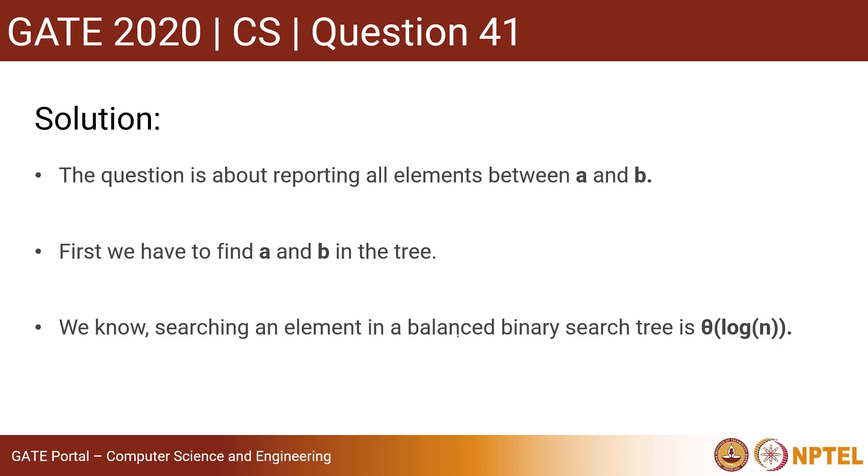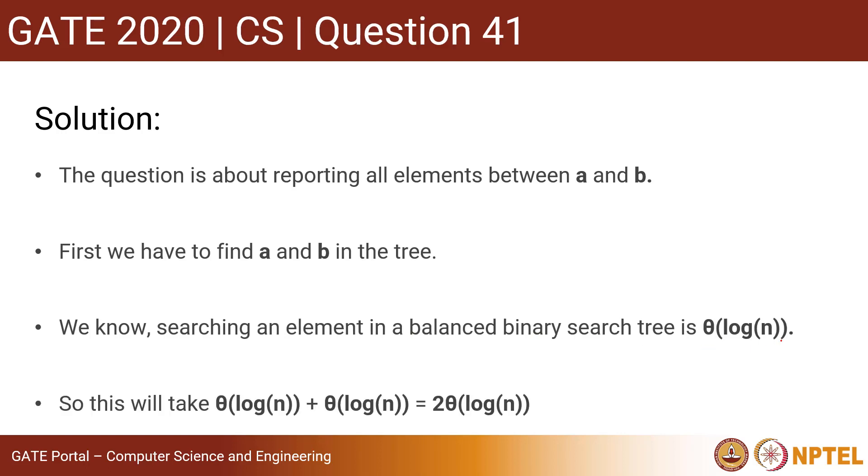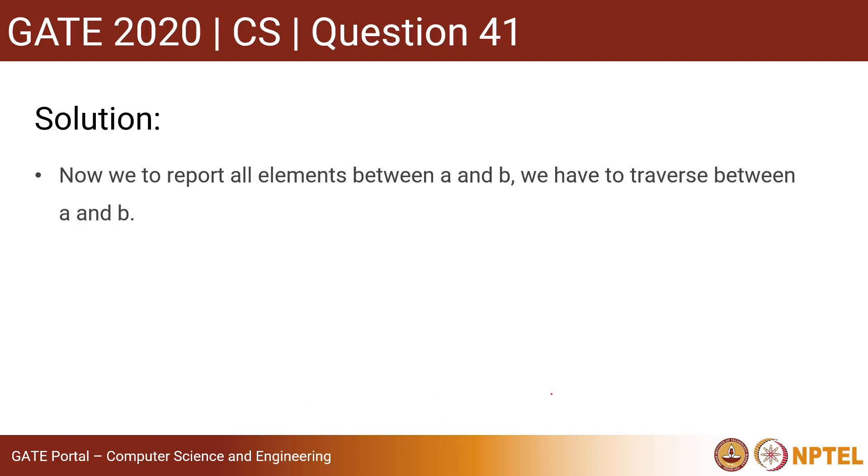Now we know searching an element in a binary search tree is Θ(log n). So searching two elements a and b in the tree will take Θ(log n) for a, Θ(log n) for b, that is 2Θ(log n).